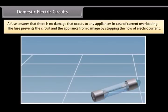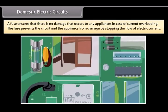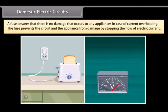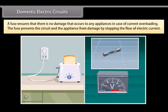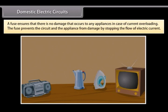A fuse is an important part of all circuits. It ensures that there is no damage that occurs to any appliances in case of current overloading. Overloading occurs when the live wire and the neutral wire come in contact with each other or there is a rise in the supply voltage. In this case the fuse prevents the circuit and the appliance from damage by stopping the flow of electric current.